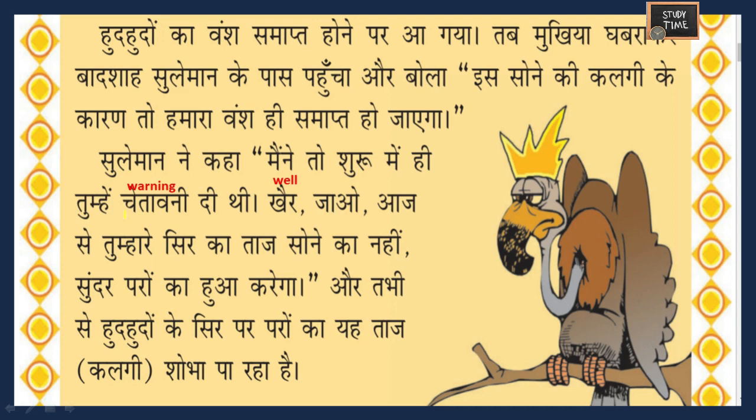The head of Hudhud became frightened and went to King Sulayman and said, 'Sony ki kalgi ke karan hamare puri vamsha ki samapti ho jaegi' - because of this gold crest our entire breed is getting destroyed. The whole generation is going to be completely destroyed.